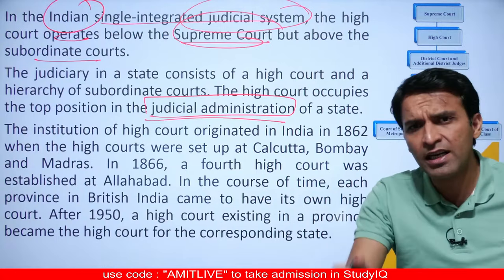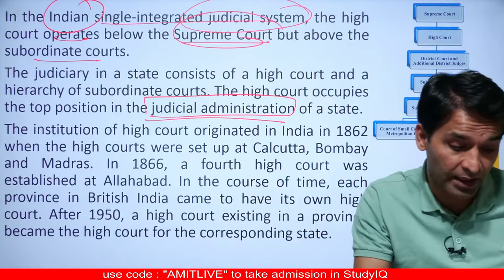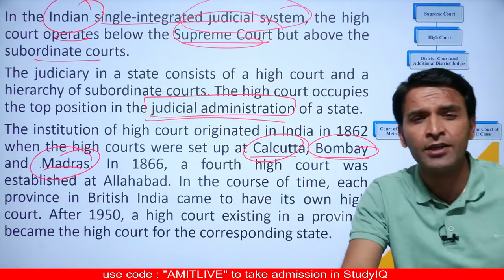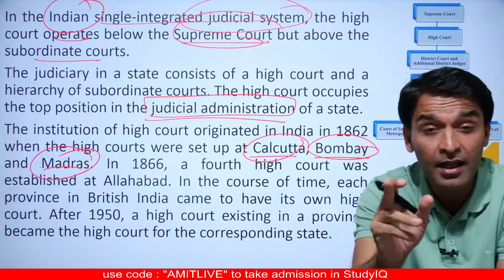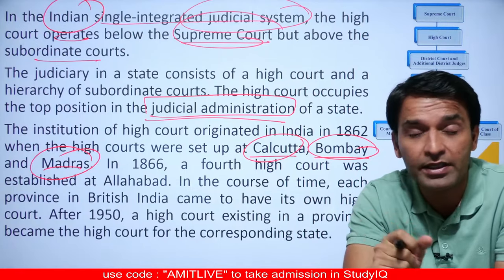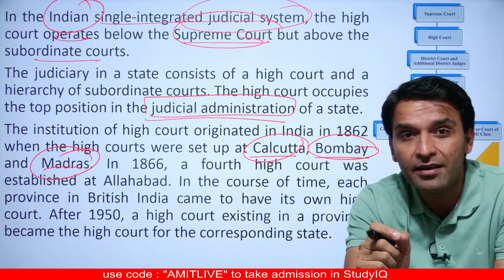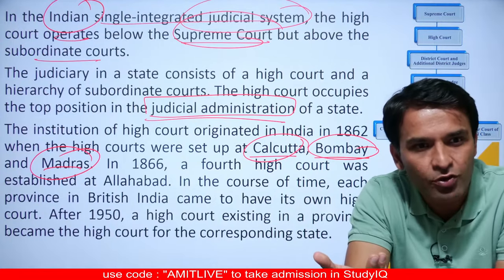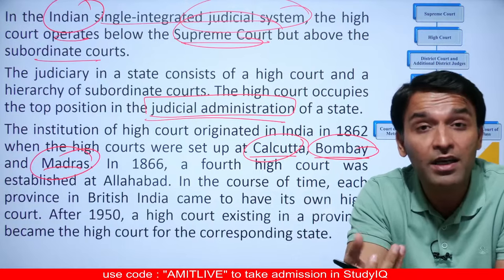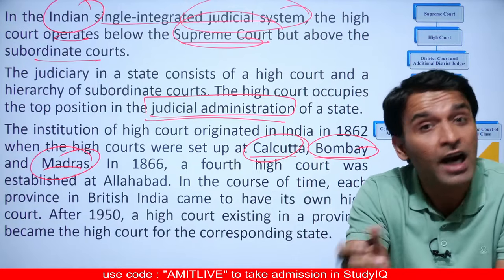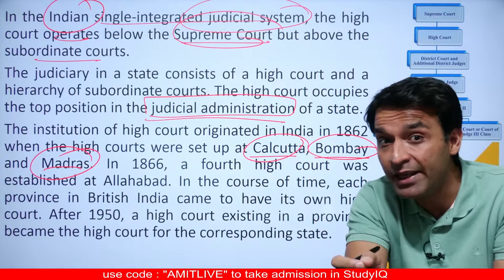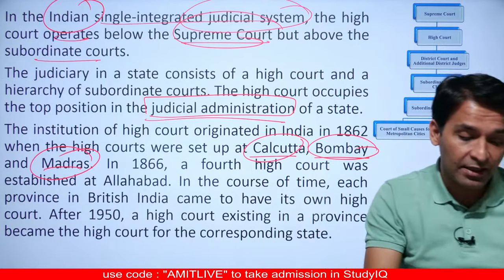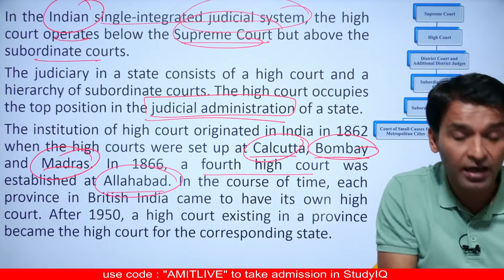The first three High Courts were established in 1862: the Calcutta High Court, the Bombay High Court, and the Madras High Court. Interestingly, all three cities have since changed their names — Calcutta to Kolkata, Bombay to Mumbai — but Madras has not. However, the courts are still called Kolkata High Court, Bombay High Court, and Madras High Court.